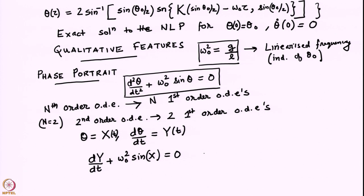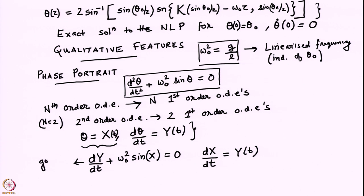What about the evolution of the variable X? We need one more equation: dx/dt. If you take theta = X(t) by definition and differentiate it, you get dx/dt = dθ/dt. But we have defined dθ/dt to be Y, so dx/dt is just Y. This follows from the definition. So this is the governing equation rewritten as a first order evolution equation for the variable Y, and the second follows from the definition of X and Y.